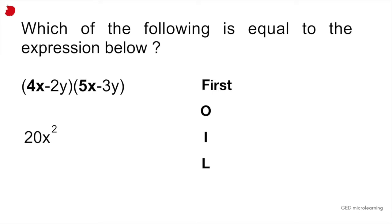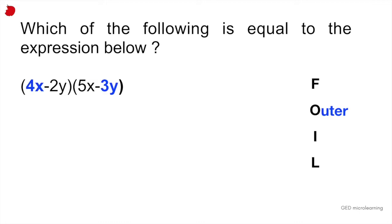You're going to take the first numbers of each of these brackets, in this case 4x and 5x, and you're going to multiply them together. So 4x times 5x is going to give you 20x squared. The next numbers that you're going to multiply are what we call the outer numbers. The numbers that are on the outermost part of the equation would be 4x and 3y. So when you multiply those two numbers together, 4x multiplied by minus 3y gives you negative 12xy.